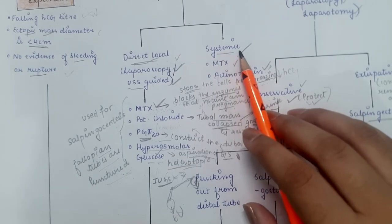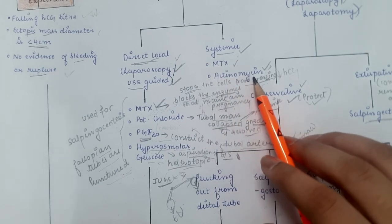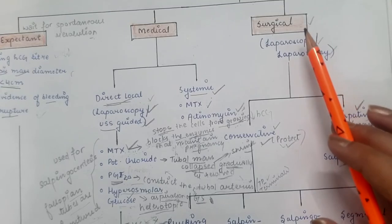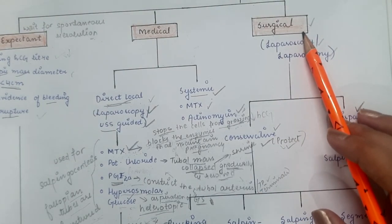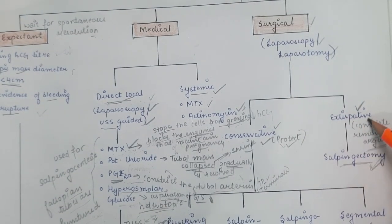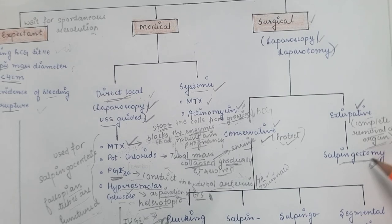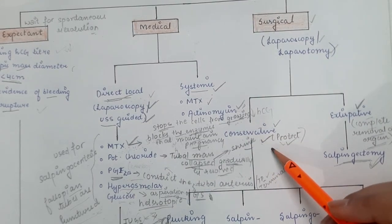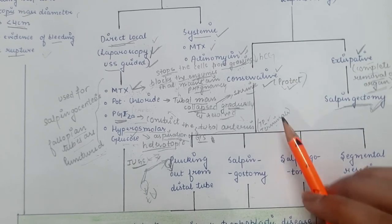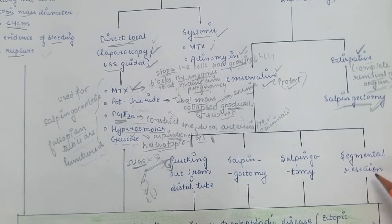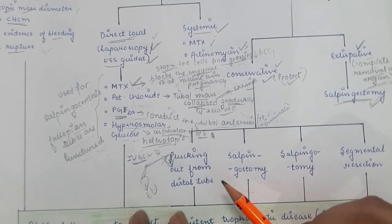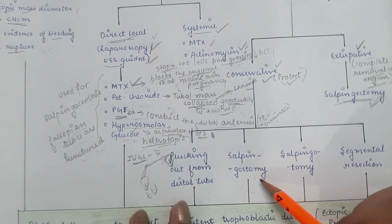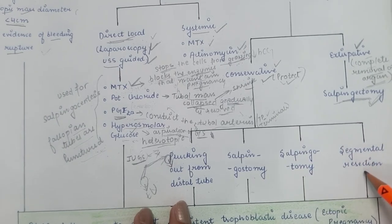Systemic administration includes methotrexate and actinomycin (both stop cell growth). Surgical management has two approaches: extirpative (salpingectomy — complete removal of the fallopian tube when damage is extensive) and conservative. Conservative surgical procedures include: plucking out from the distal tube (when implantation is at the infundibulum), salpingostomy (linear incision to remove contents, leaving incision open to heal), salpingotomy (same but incision is closed with sutures), and segmental resection.